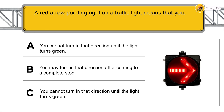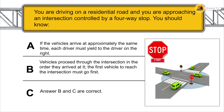A red arrow pointing right on a traffic light means that you cannot turn in that direction until the light turns green.